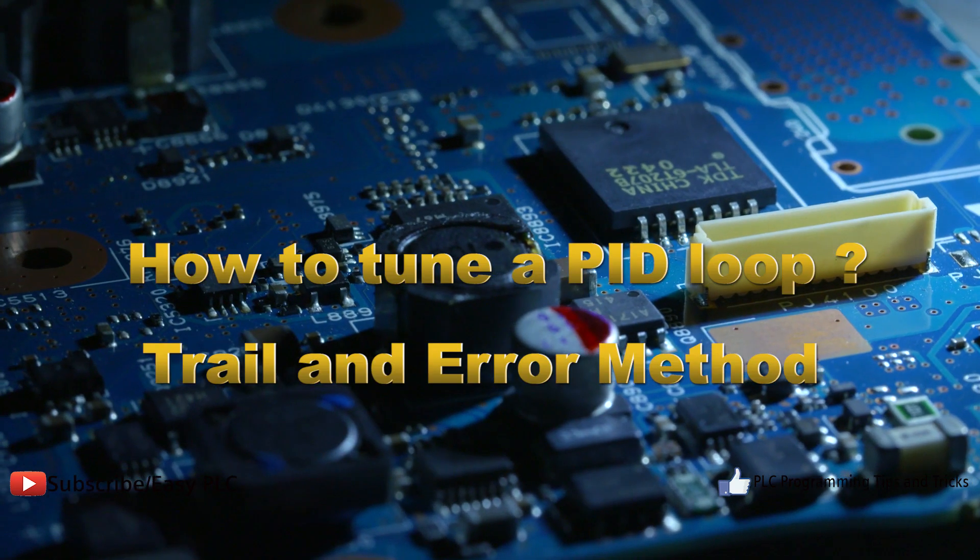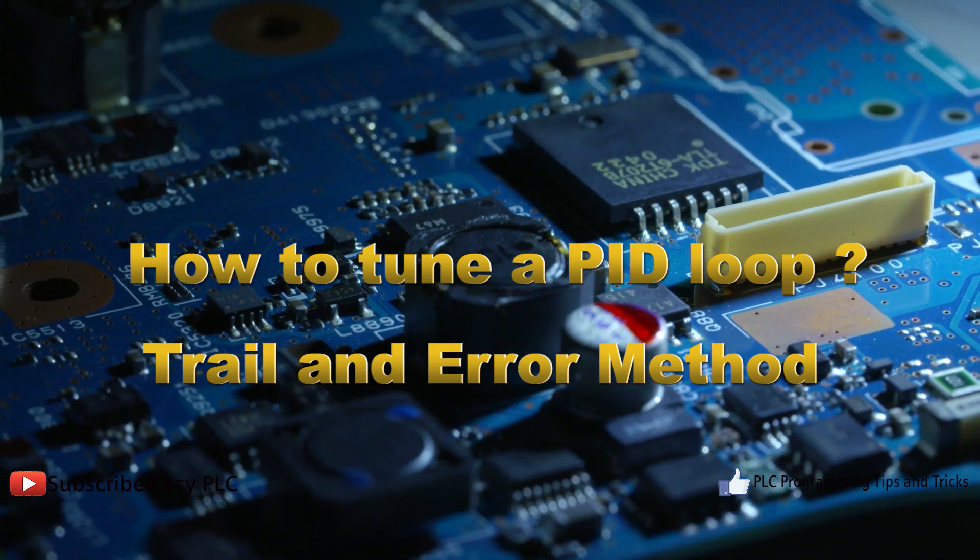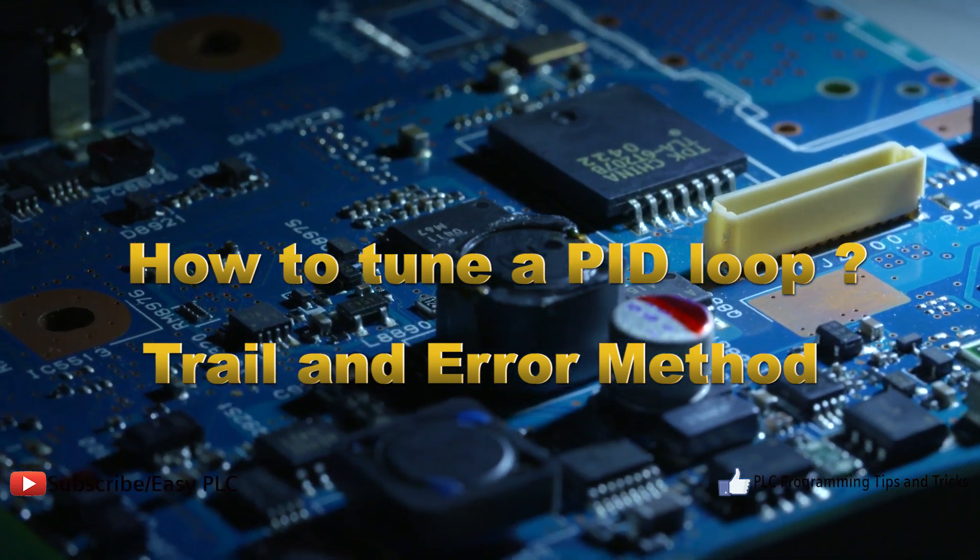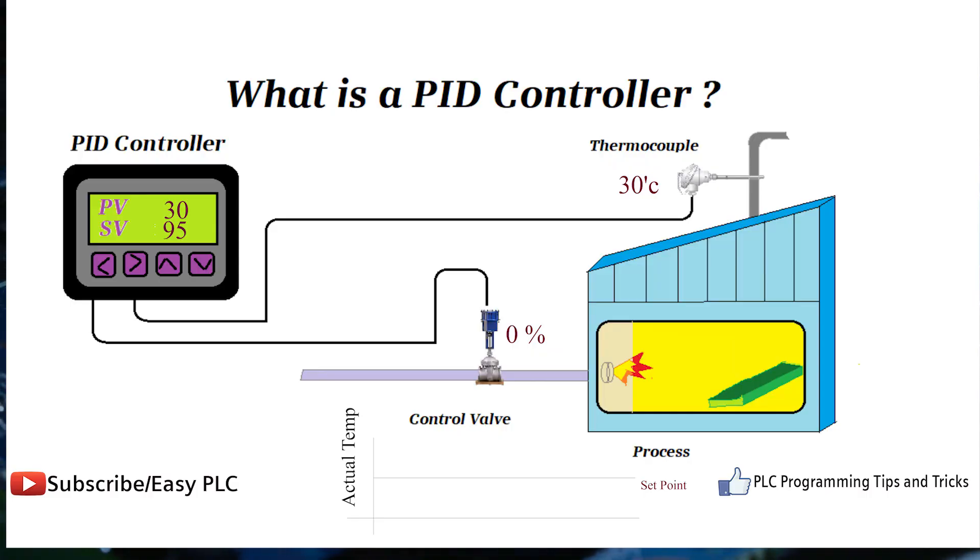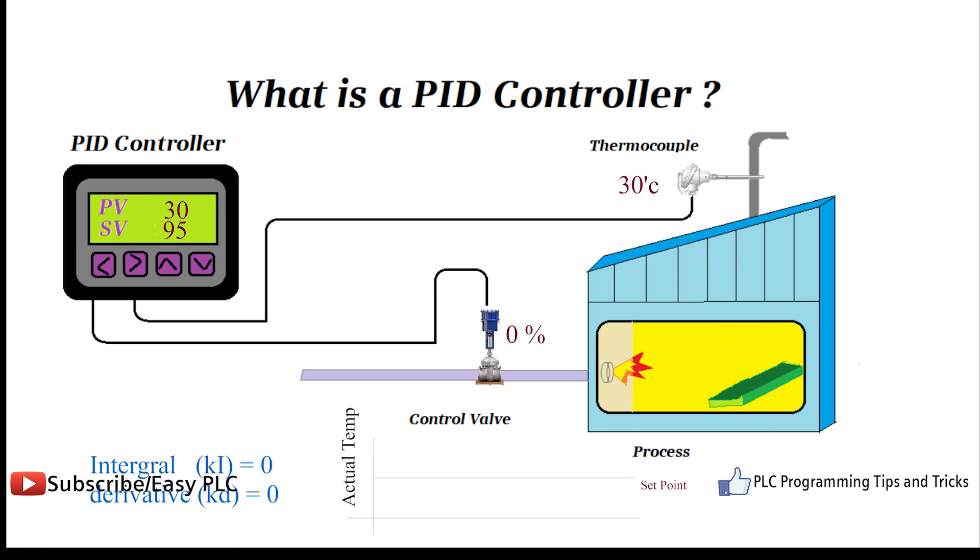Trial and error method: It is a simple method of PID controller tuning. While system or controller is working, we can tune the controller. In this method, first we have to set KI and KD values to zero and increase proportional term Kp until system reaches oscillating behavior.